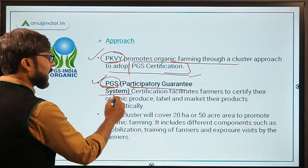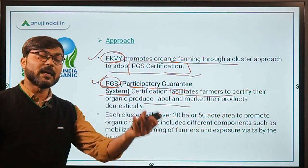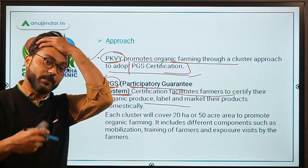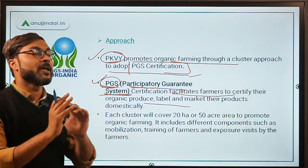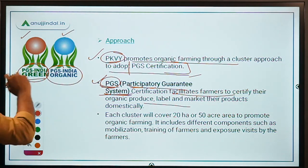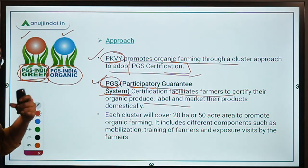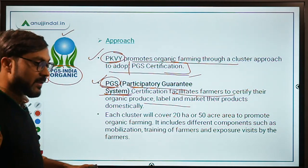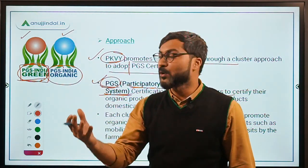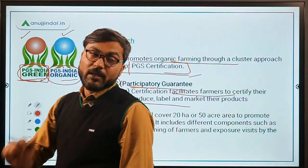PGS stands for Participatory Guarantee System. This system facilitates farmers to certify their organic produce, label them, and market them directly to consumers. There are two types of logos: if there is a 'PGS India Green' logo, the produce is under the process of becoming organic — it is not yet 100% organic. If there is a 'PGS India Organic' logo, then the produce is 100% organic.